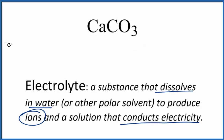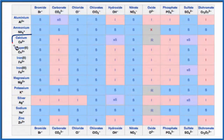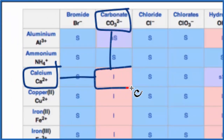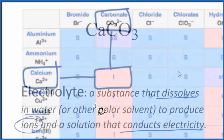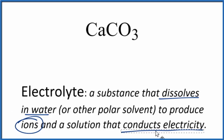Let's look at a solubility table. We find calcium right here, and here's our carbonate. We go over and we see that calcium carbonate — that's I, insoluble. It doesn't dissolve in water, or only a very small amount dissolves in water. So based on our definition, it does dissolve a little bit in water, so there will be some ions and it will conduct electricity, but there won't be many.